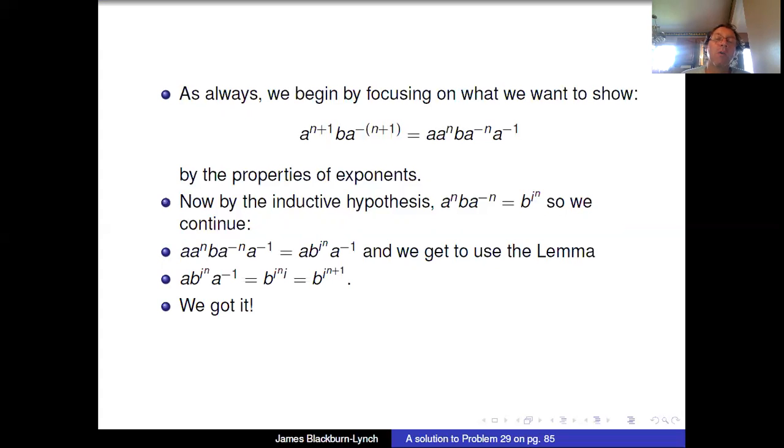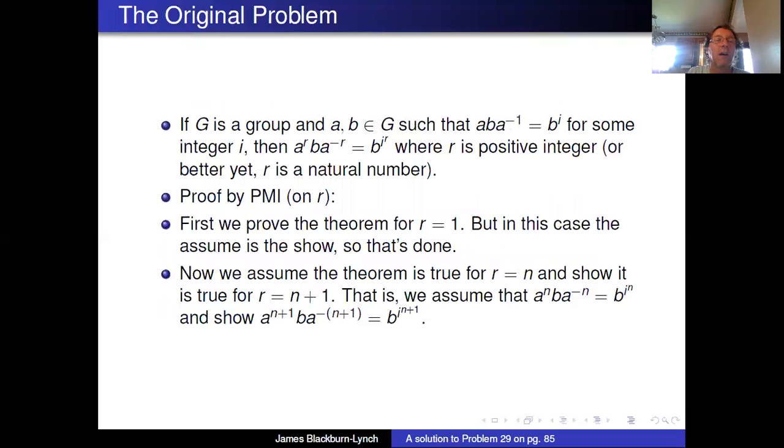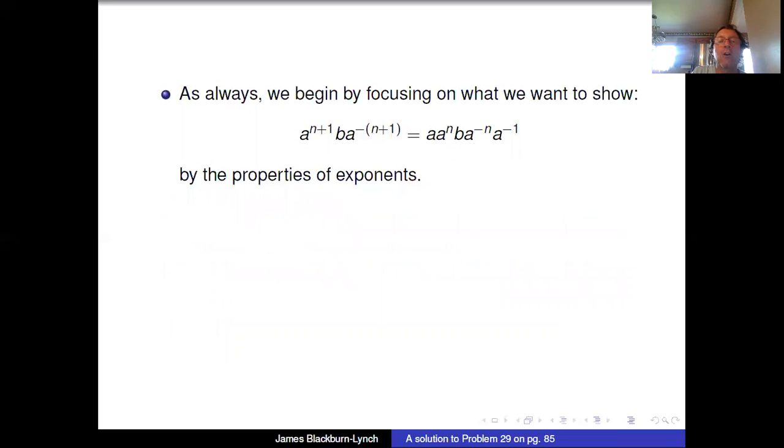We wanted to show that a^(n+1) ba^(-n-1) is equal to b^(i(n+1)). Let's even slide back so you can see that that is indeed our show on the fourth bullet here. That is, we assume this and we want to show exactly what we have shown, and that's it.